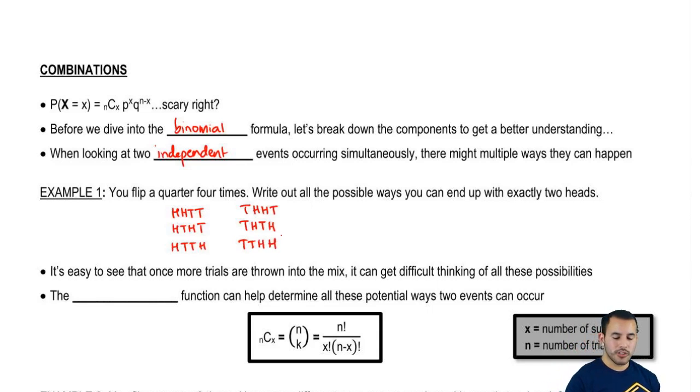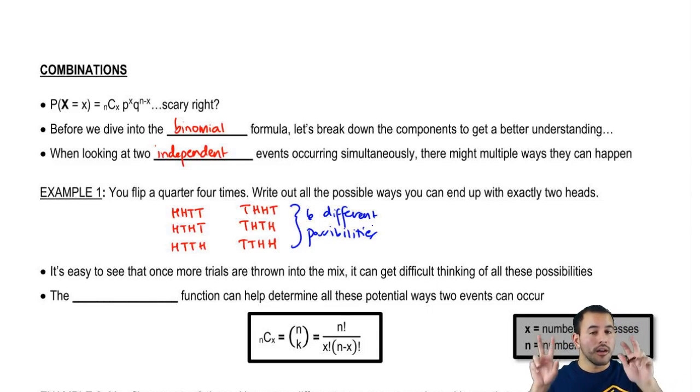Does that make sense? So technically there's six different possibilities for us to get two heads. That just has to do with the order. But we have to take those into account because those are also outcomes within our sample space. If we're trying to say two heads, that's an event that includes six outcomes from our total sample space.